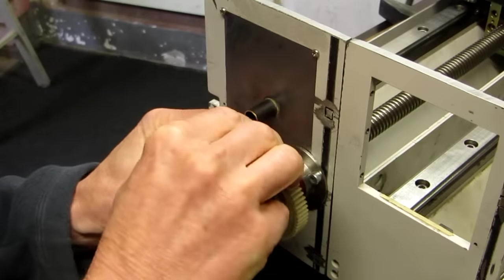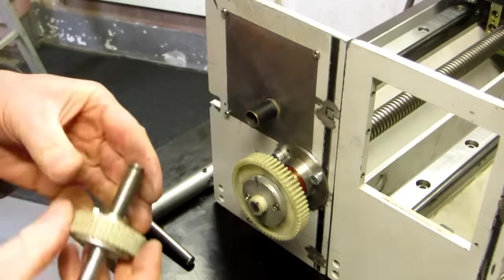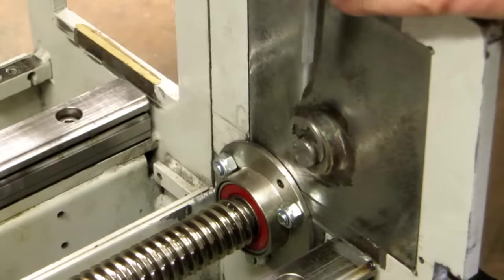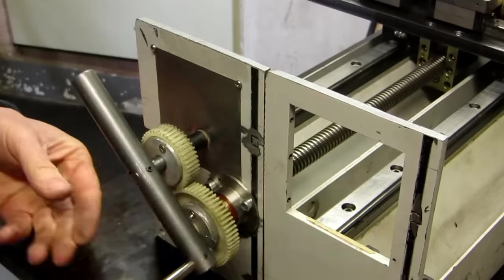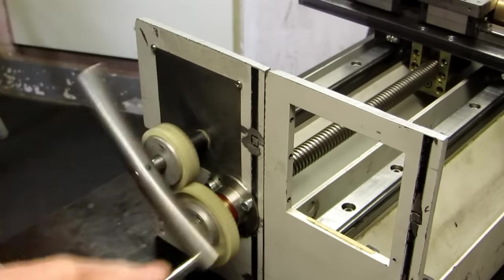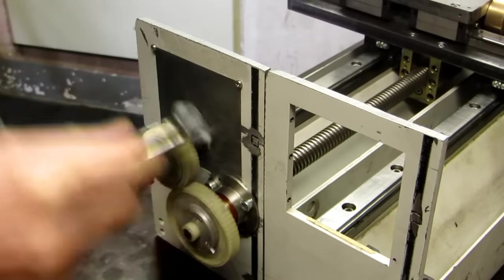The lead screws have right hand thread, so I added a gear for making the carriage move towards the chuck when turning the handle clockwise. The gears came from an old copy machine. I get 3mm carriage movement per turn of the handle.